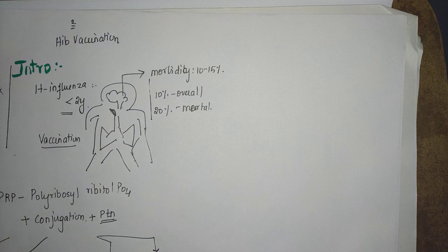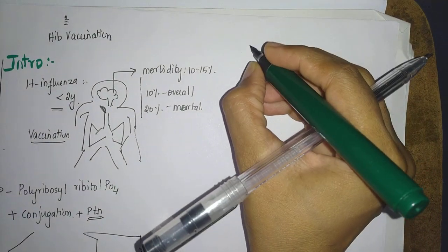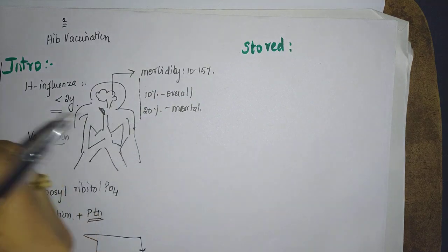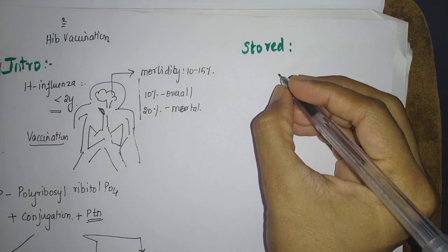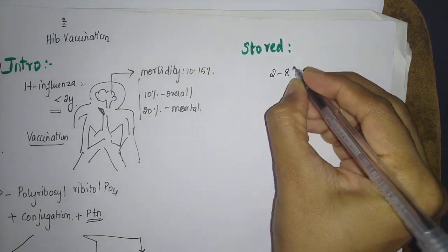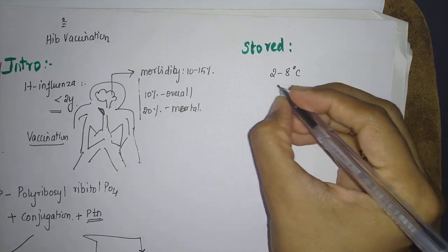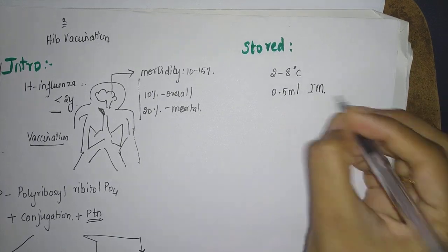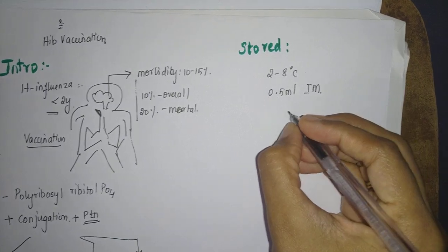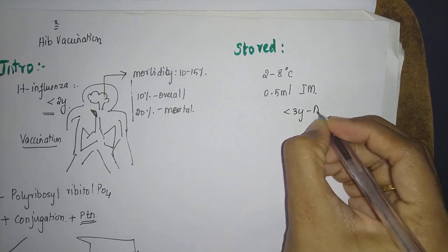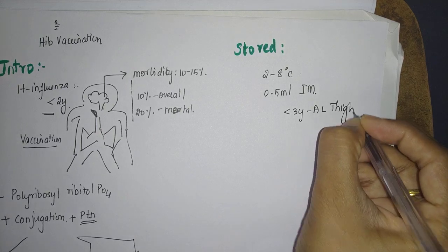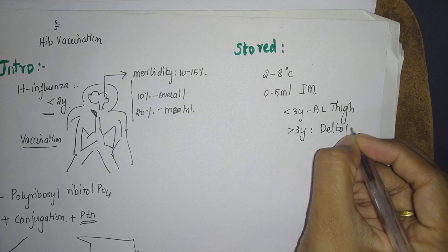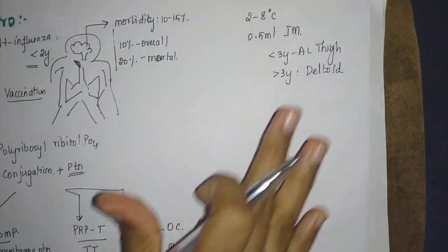How is it going to be stored and used? Storage: 2 to 8 degrees Celsius. 0.5 ml IM is the route of injection. IM less than three years prefer anterolateral thigh and more than three years prefer deltoid.